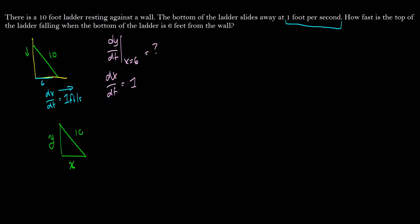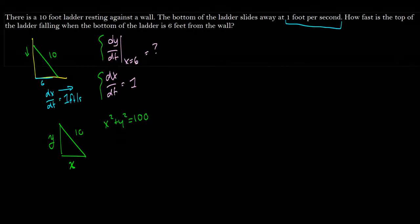So we know the Pythagoras formula, x squared plus y squared is equal to 100. And this is what we mean by related rates. We have found a formula that relates x and y, which are dx/dt and dy/dt. So that's what we found.